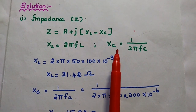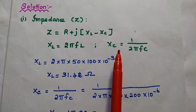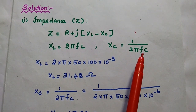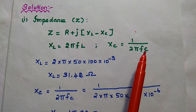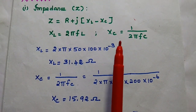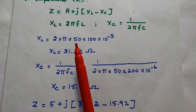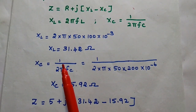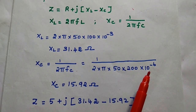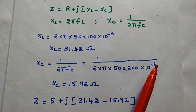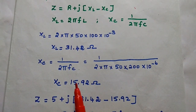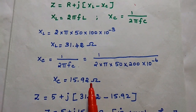Next we have to find out the capacitive reactance. That is XC is equal to 1 by 2 pi F C. Here we know the values of F and C, so we can substitute those values. The capacitive reactance XC is equal to 1 by 2 pi into 50 into 200 microfarad — micro means 10 to the power minus 6. Then we can get the capacitive reactance as 15.92 ohm.